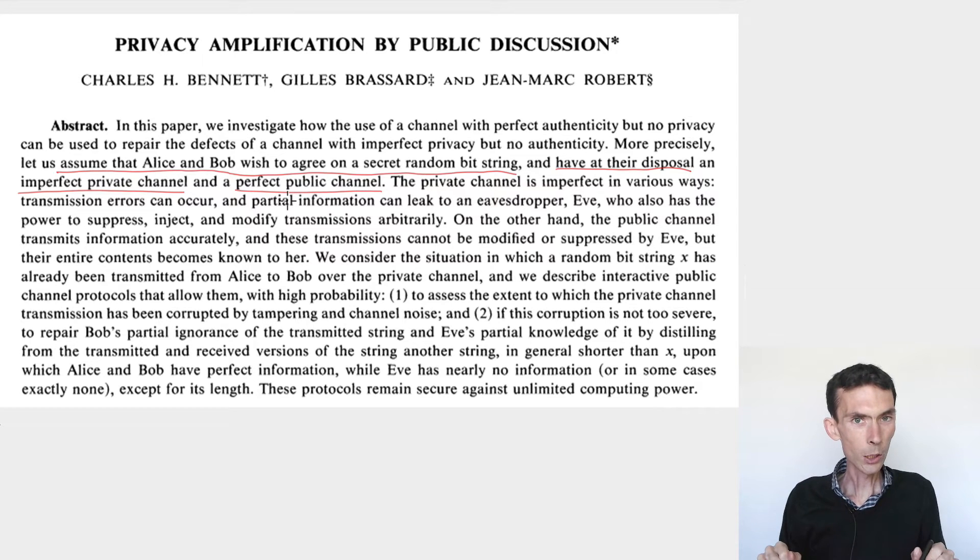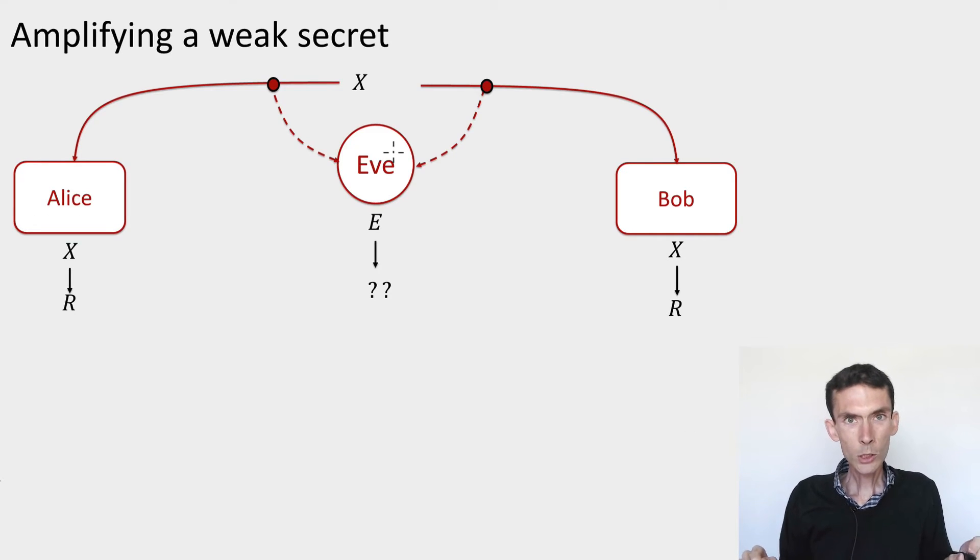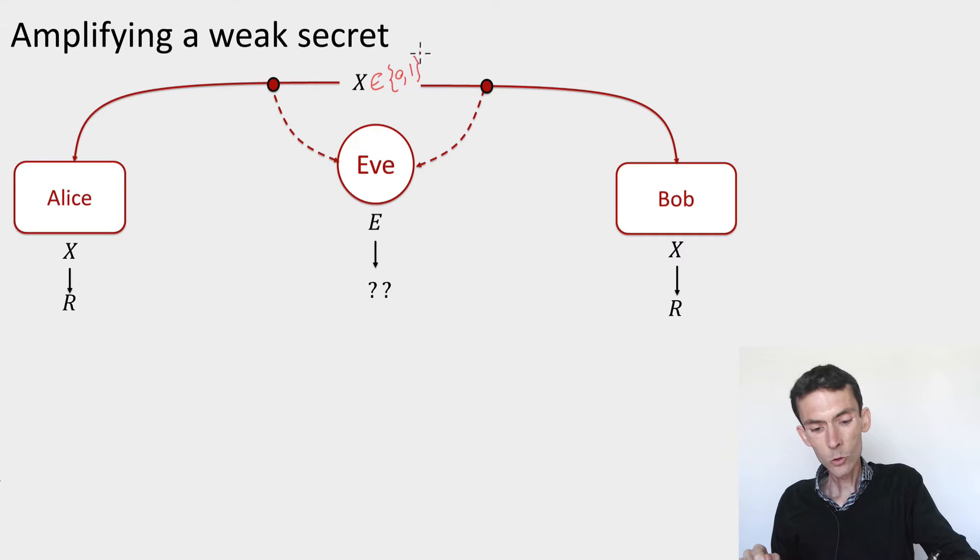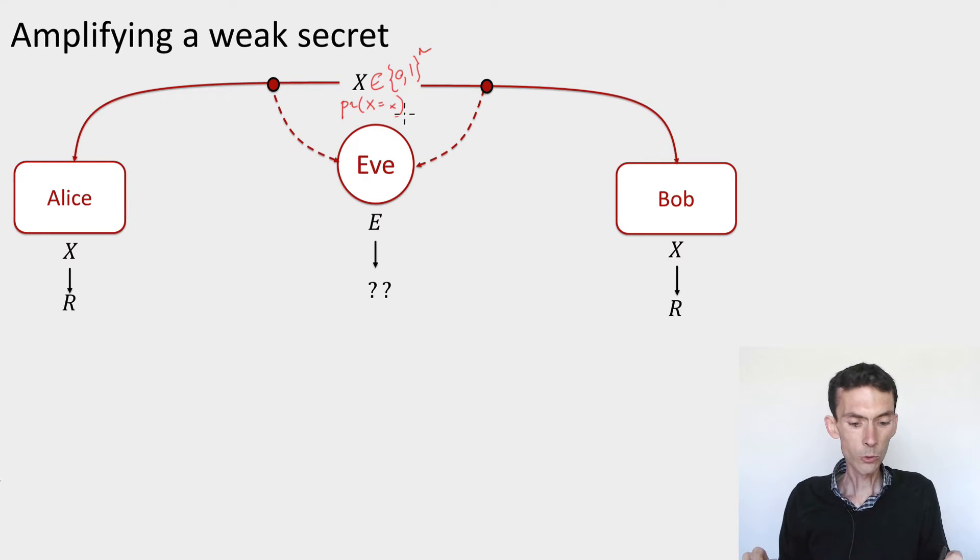We'll see next week how using quantum information we can implement this imperfect private channel. So let me set things up in a little bit more detail. Let's have a picture. We first imagine that we have a string x. This string x will be distributed in {0,1}^n, so it's an n bit string, and it has a certain distribution px. It could be uniformly distributed or not uniformly distributed. This string x is communicated to both Alice and Bob. It was generated using the imperfect private channel and this is why it's not uniformly distributed.